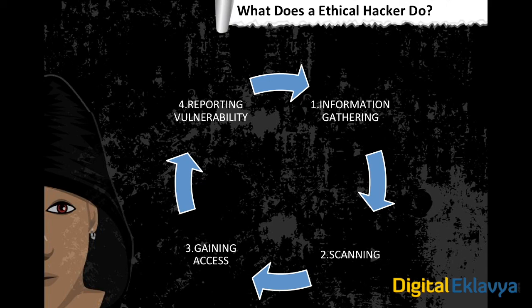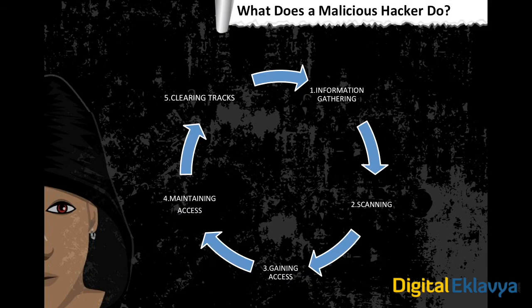Next is reporting the vulnerability. After exploiting, we document the result of whether the vulnerability was successfully exploited. Based on this, we make a report and submit it to the system admin or website owner. This is the bug bounty procedure — what an ethical hacker does.